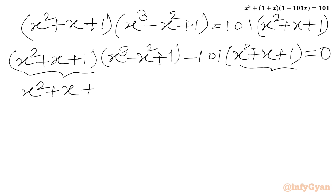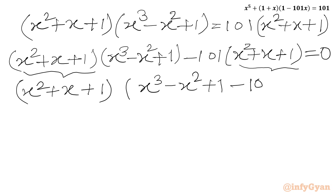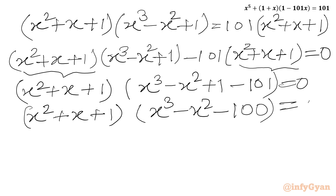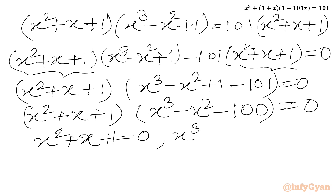So I will write x square plus x plus 1 common out. In the other bracket we will get x cube minus x square plus 1 minus 101 equal to 0. Or I can write x square plus x plus 1 times x cube minus x square minus 100 equal to 0. Now from the zero product rule, we can write two equations: x square plus x plus 1 equal to 0, or the cubic equation x cube minus x square minus 100 equal to 0. So we will solve both equations one by one.